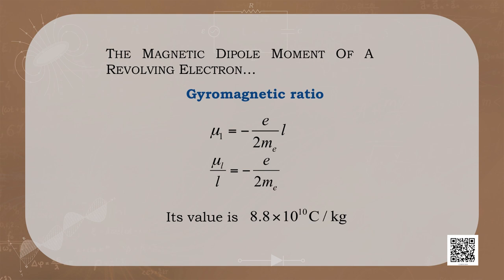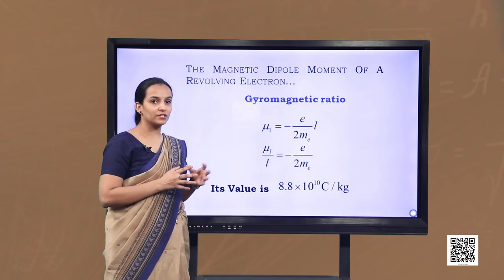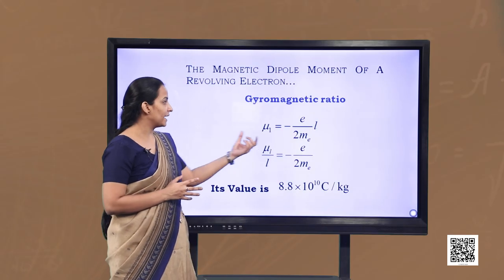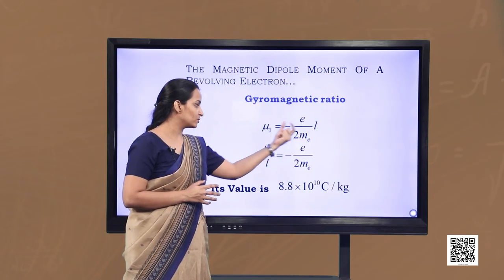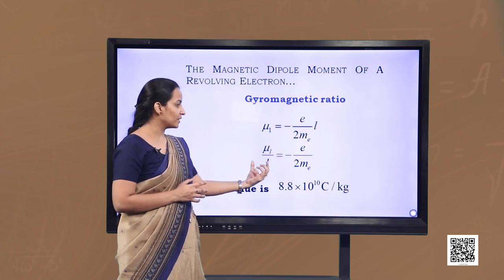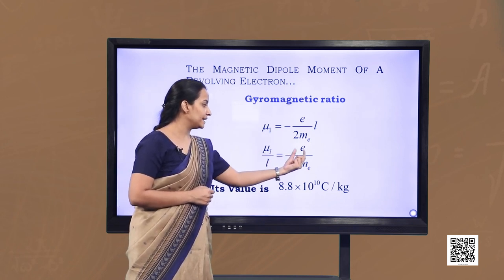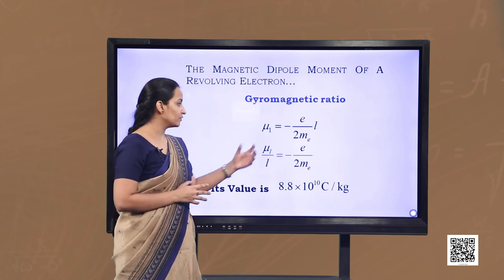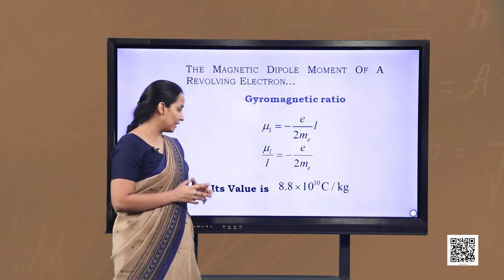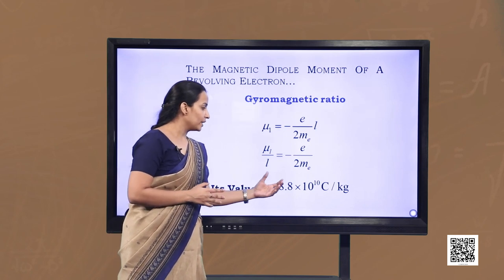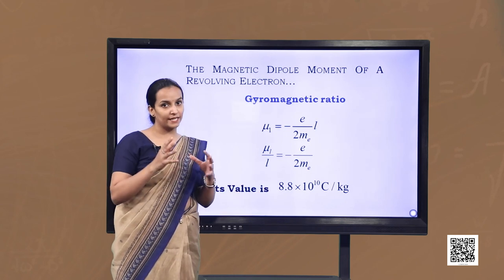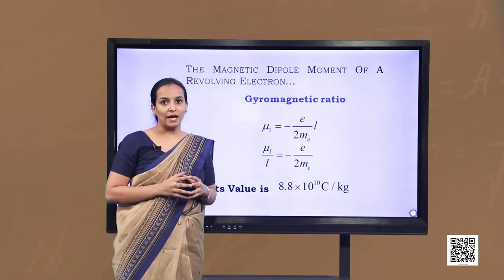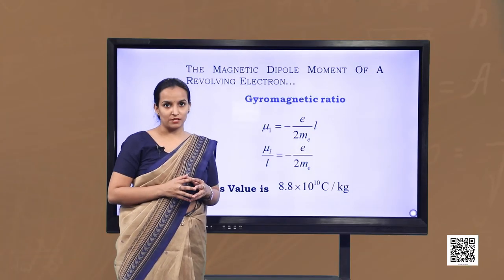The gyromagnetic ratio is the ratio of the magnetic moment of the revolving electron to the orbital angular momentum, given by μl/L = −e/(2mₑ). On substituting the magnitudes of e and mₑ, we get a value of 8.8×10¹⁰ C/kg. This value has been verified by experiments.